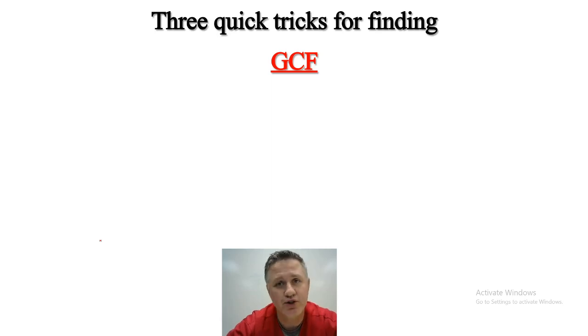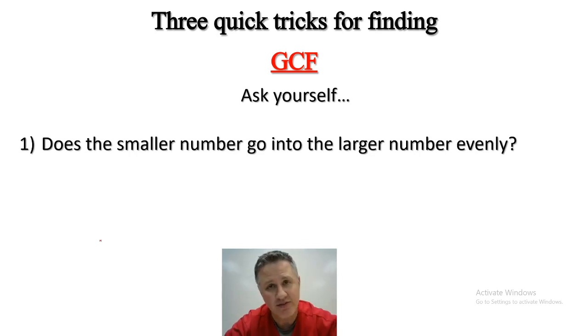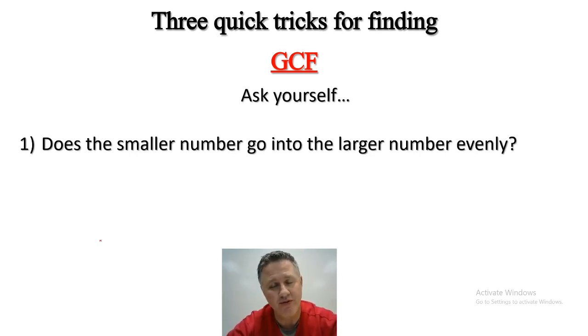So let's look at the first trick. Number one, you want to ask yourself: does the smaller number go into the larger number evenly? If so, that smaller number is the GCF.